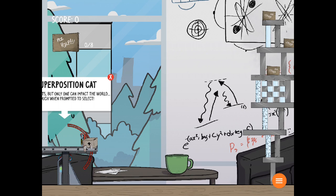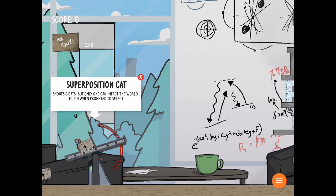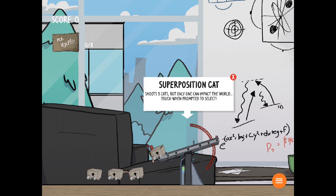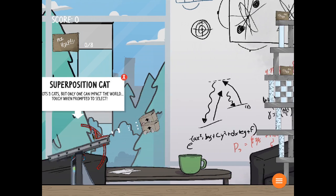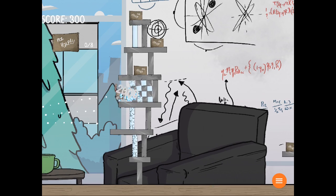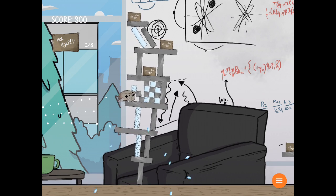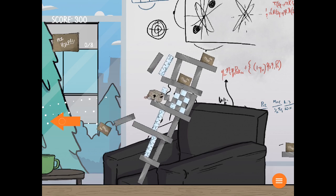So let us now go on to this level. Here we have a superposition cat. It shoots three cats, but only one can impact the world. So we shoot it, and now we have to make a choice. Let's choose that one there. And that one goes on to be the one that exists.